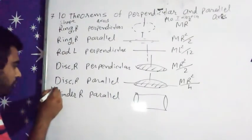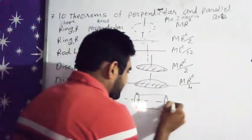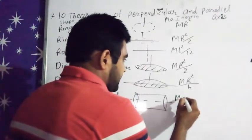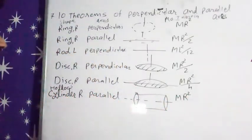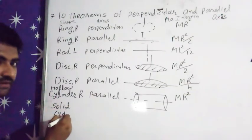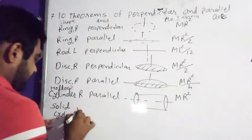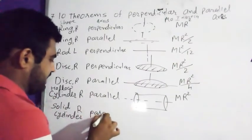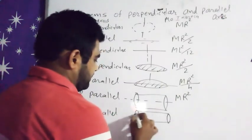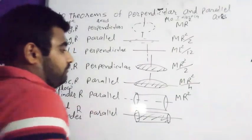Moment of inertia MR square. Now solid cylinder, solid cylinder of radius R, again axis is parallel. So solid cylinder is passing through optical axis, now moment of inertia is MR square by 2.